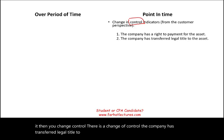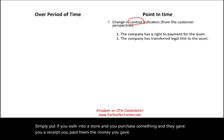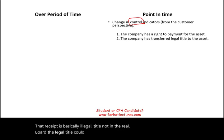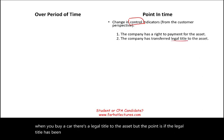Second indicator: the company has transferred legal title to the asset. If you walk into a store, purchase something, pay money, and receive a receipt, that receipt is basically a legal title. In the real world, legal title could be an actual legal document — like when you buy a house or a car. If the legal title has been transferred, the sale took place. That is a point in time.